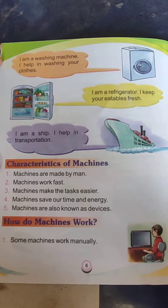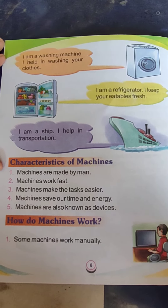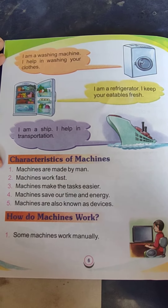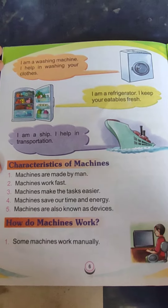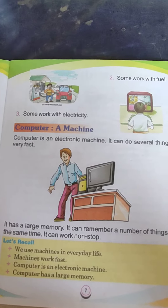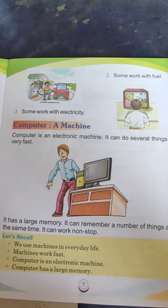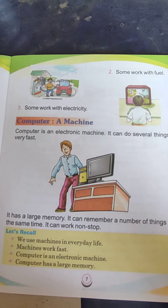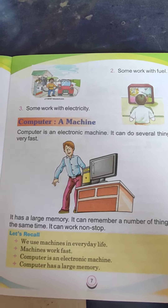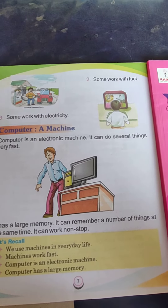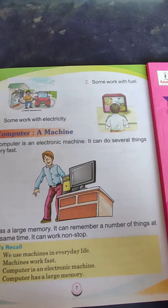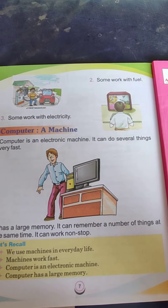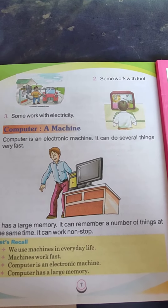How do machines work? Number one: some machines work manually. Number two: some machines work with fuel. Number three: some work with electricity. A computer is an electronic machine. It can do several things very fast.